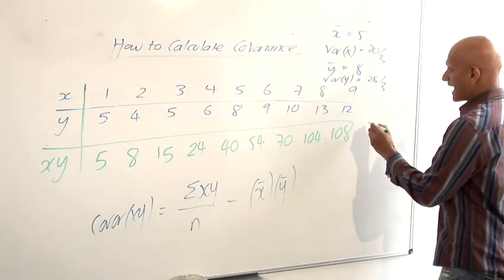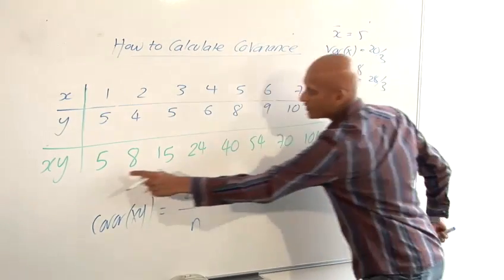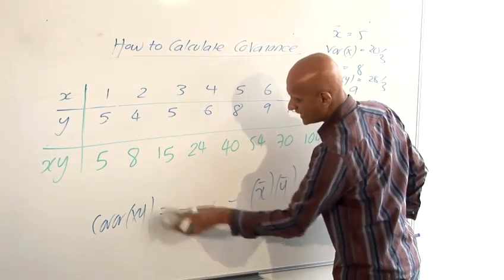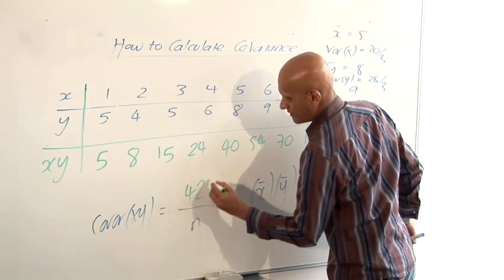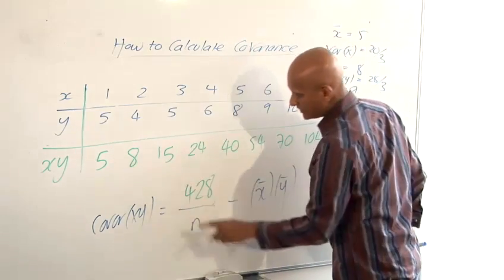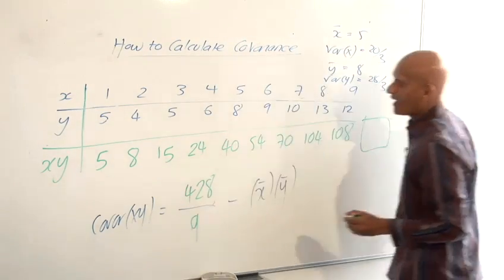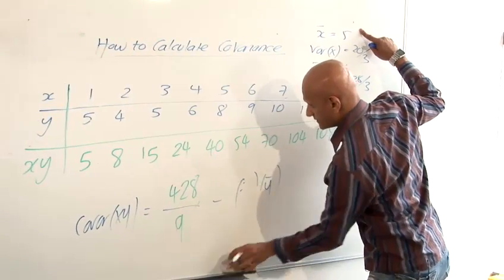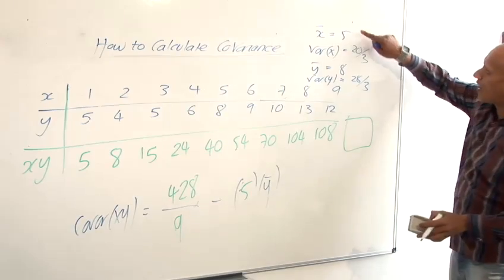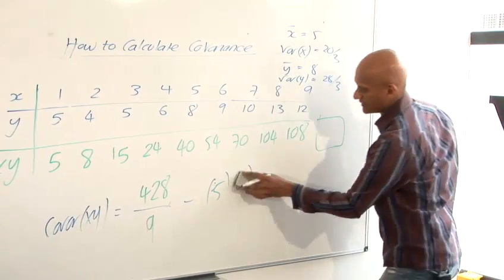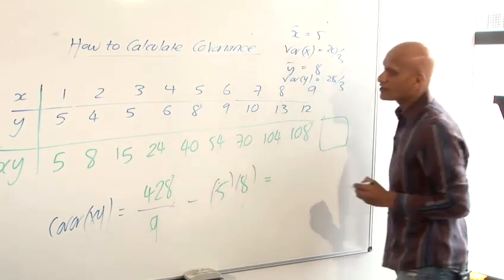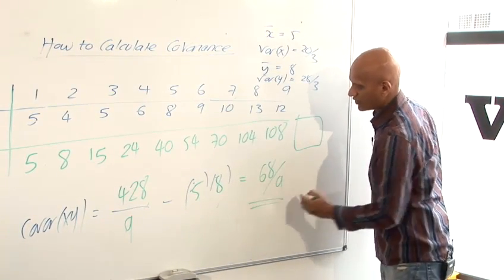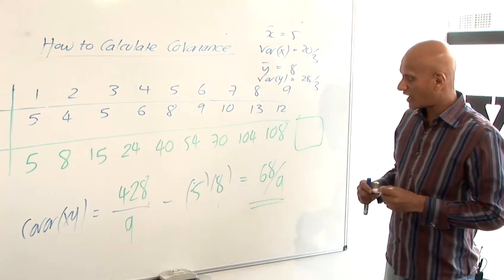Our sigma XY is found by adding all of these together. So we add all of these together. Again sticking that into the calculator that gives you 428. Our N is still 9 that's 9 values. Our mean of X we worked out before was 5 and our mean of Y we worked out before was 8. And again just sticking that into the calculator gives us our answer as being 68 over 9 for the covariance XY. So that's how to work out the covariance.